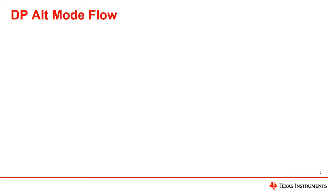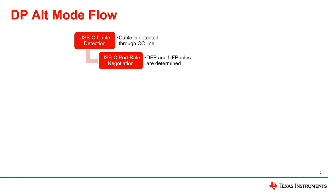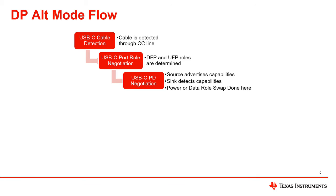Next, let's describe the general flow behind a DP alt mode implementation beginning in a USB connection. First, a USB connection is detected via the CC pins of a USB-C connection. After this, USB-C port role negotiation begins, with the downstream facing port and the upstream facing port roles being determined. After this, USB-C power delivery negotiation begins. At default, the power delivered via the VBUS pin is 5 volts at 500 milliamps. Through battery charging 1.2 (BC 1.2) or USB PD, this can be further negotiated to a desired power over VBUS beyond the default. Initially, the source will advertise its capabilities while the sink will detect its capabilities. Additionally, at this time, power or data role swap will be done.